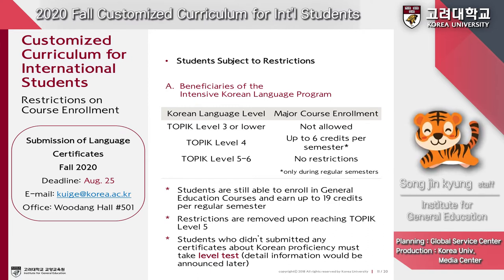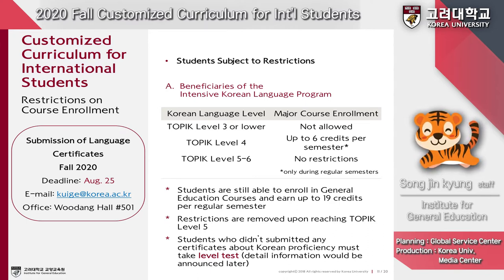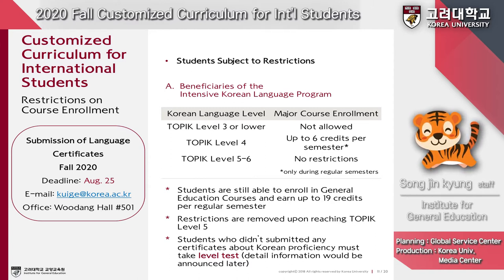Students can submit additional language certificates to have restrictions removed by August 25th, either by email or visiting our office. If you do not submit any Korean proficiency certificates, you must take a level test. The offline level test will be held on August 21st, and the online test will be held August 18th to 19th. You must apply for the test via email — detailed information was announced via email, so please check it.